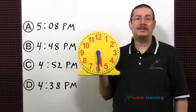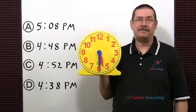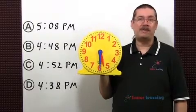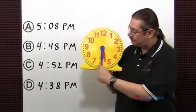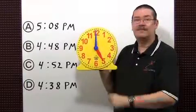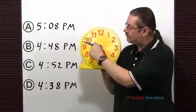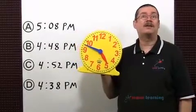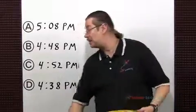Arthur would need to leave 42 minutes before 5:30. To find the exact time, split 42 into 30 plus 12. First, take away 30 minutes from 5:30, which gives 5:00. Then subtract 12 more minutes — the time would be 4:48 PM, which is choice B.